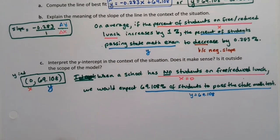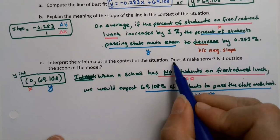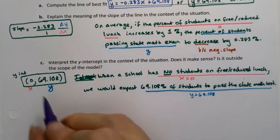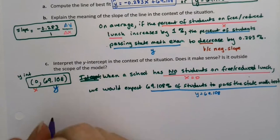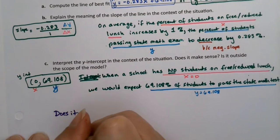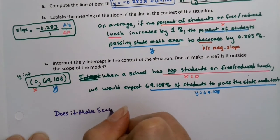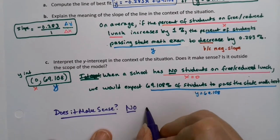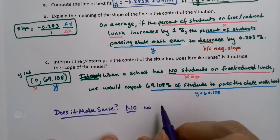Now, they ask the question, does it make sense? And I would argue, no. No, it does not make sense. So we did the interpretation. Let me write down here, does it make sense? No. So no public school has nobody on free or reduced lunch.